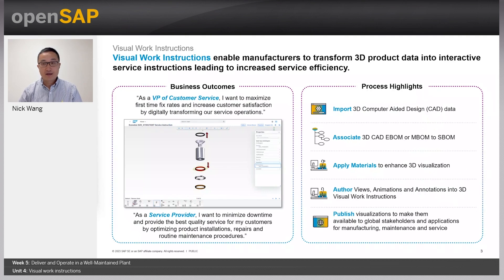Visual work instructions show how to assemble a product on the shop floor or how to maintain equipment installed in the field. It enables manufacturers or service providers to transform 3D product data into interactive service instructions, which ultimately increase service or production efficiency. Imagine a service technician sent to the field to fix something — he or she can see exactly what needs to be done using 3D visual work instructions, increasing productivity, accuracy, and ultimately customer satisfaction. Not only can 3D visual work instructions be used as assembly instructions or service procedures, they are also an effective tool for product training.